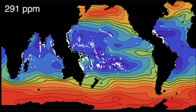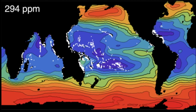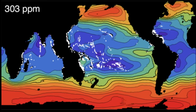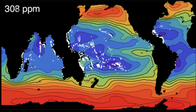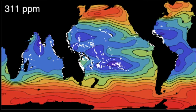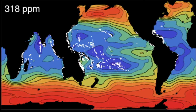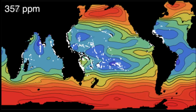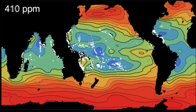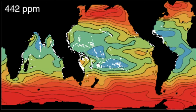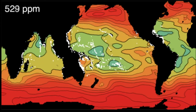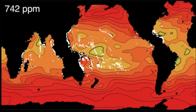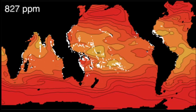This animation we made based on our results shows a map of the multi-model ensemble median aragonite saturation of the ocean, starting around 1860 and projected by the models out to year 2100 under a business-as-usual scenario. The numbers up top show how the atmospheric concentration of carbon dioxide is increasing over time.